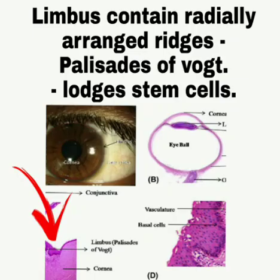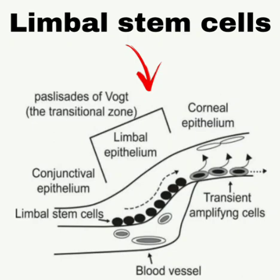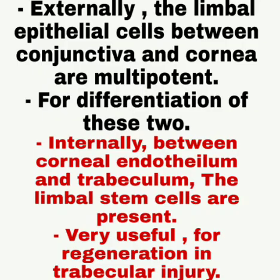Besides aqueous outflow, the limbus also contains stem cells, which are located in the palisades of Vogt — radially arranged ridges that contain limbal stem cells. Externally, the limbal epithelial cells between the conjunctiva and cornea are multipotent, helping in differentiation of both. Internally, between the corneal endothelium and trabeculum, limbal stem cells are also present.